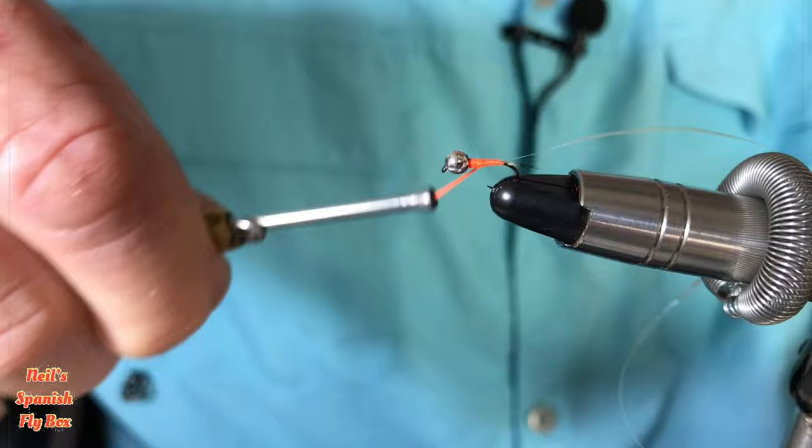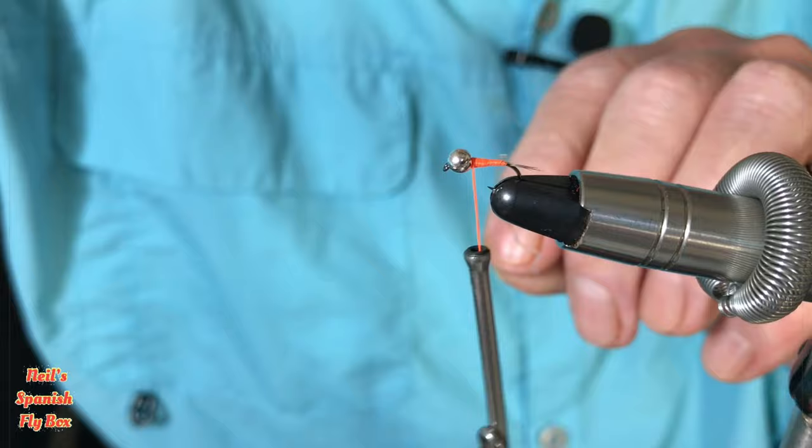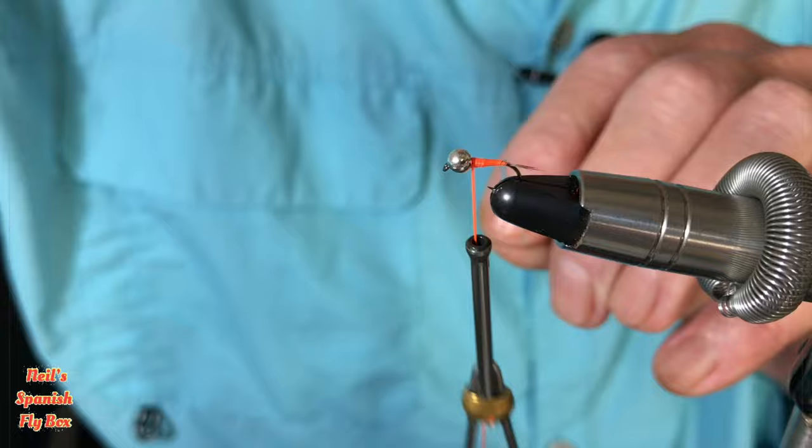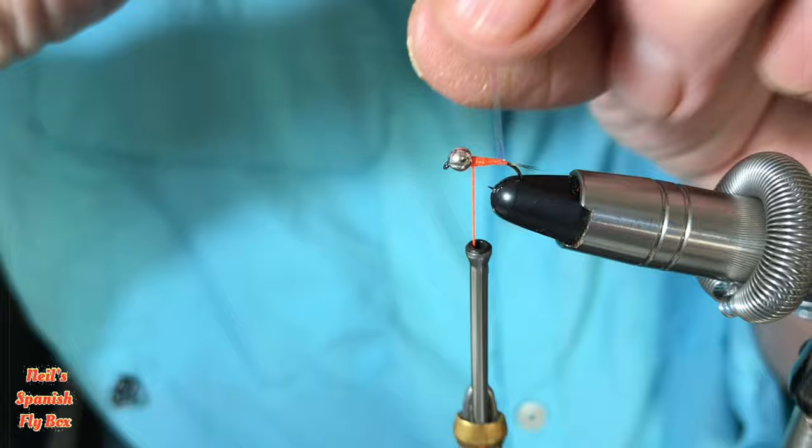I'm going to put just a little bit of super glue on there to secure the wrap. Don't need a lot. And when you're doing these turns, you can overlap them because it's translucent and it doesn't affect the fluorescence of the orange floss coming through.